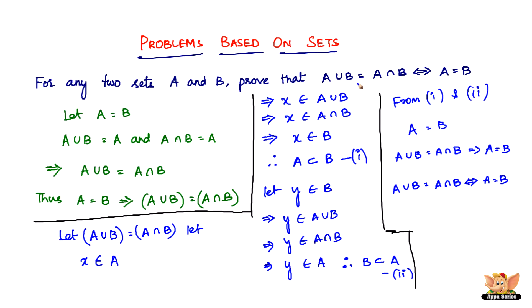So we've proved it. To briefly summarize: first we took A equal to B and showed that A union B equals A intersection B. Then we assumed A union B equals A intersection B and ended at A being equal to B. When you can do that both ways, this stands valid. That ends this problem as well as this video. I'll see you in the following videos with more problems based on sets.